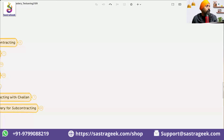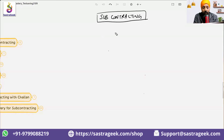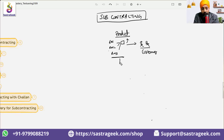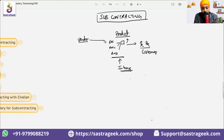Subcontracting is a process where we have a product which we want to consume internally or sell to the customer. We also have ingredients for this product — RM1, RM2, RM3. We don't want to produce this in-house, and we have a vendor who is supplying these raw materials. We can have multiple vendors who can supply these raw materials.